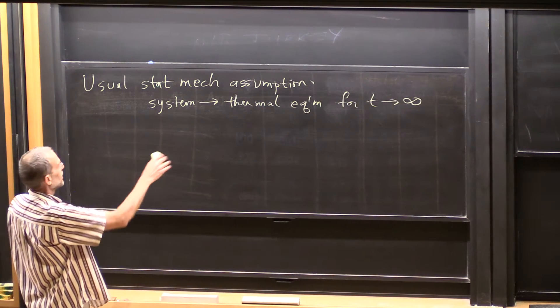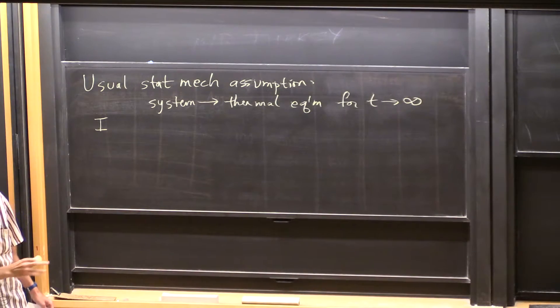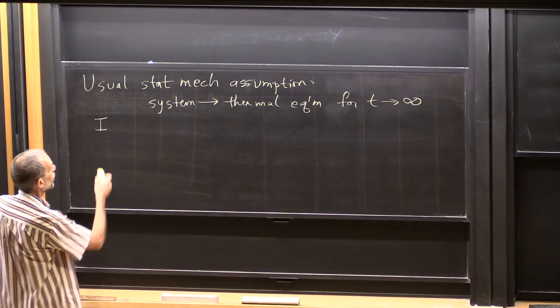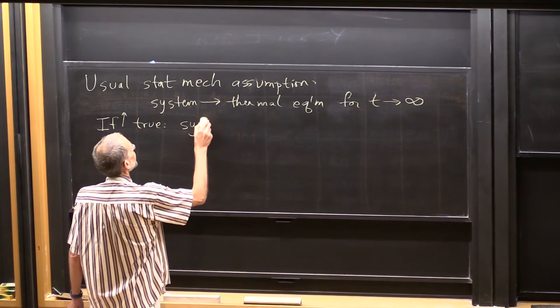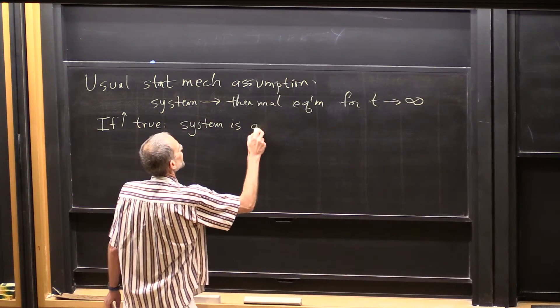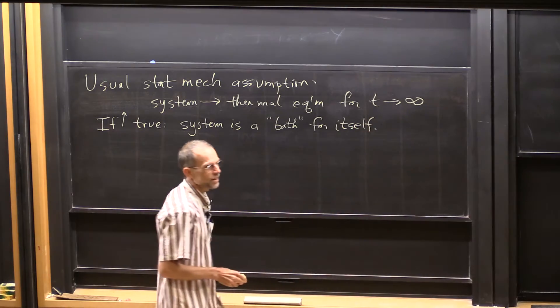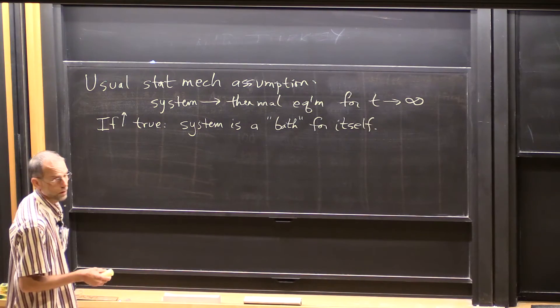Now when this happens, so if true, the point here is we assume this when we do statistical mechanics, but it's not always true. And that's what many-body localization is about, is the situations where it's not true. But when it's true, what's happening is the system is a bath for itself. It didn't need an external bath to bring itself to equilibrium. It itself is a bath and brought itself to equilibrium. More precisely, it brought subsystems to equilibrium.